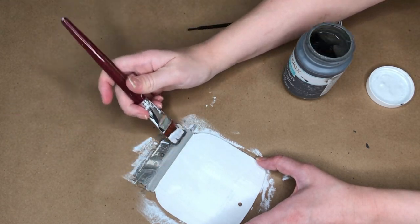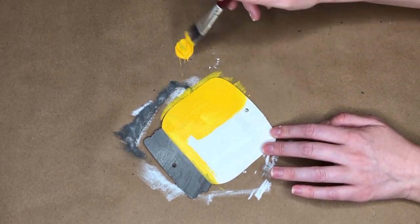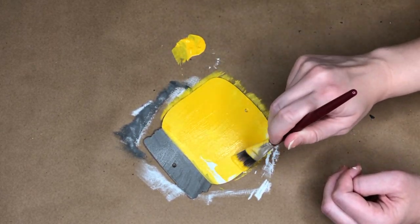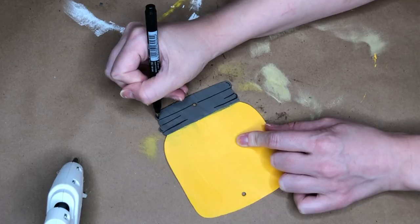Then to paint my actual honey pot I am taking the shade Moonflower by Folk Art. It's a really perfect honey colored color and I am painting our mason jar which I'm now turning into a honey pot.